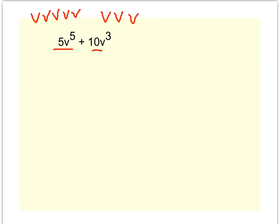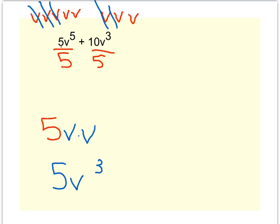And then ask, what's the biggest number that could divide out from 5 and 10 evenly? Well, it'd be a 5. So I'm going to take out a 5 and then figure out how many v's I can take out. One pair, two pairs, and a third pair. So that would be 5v³.